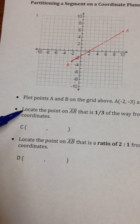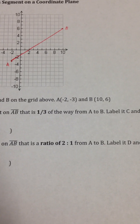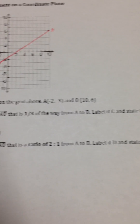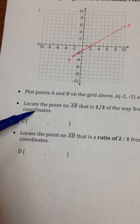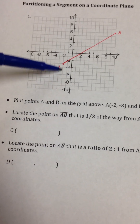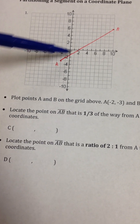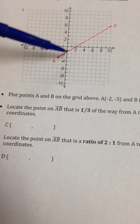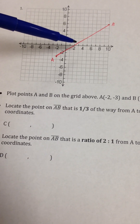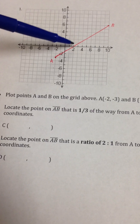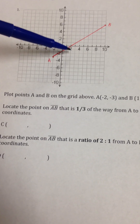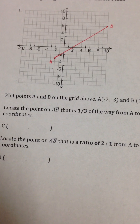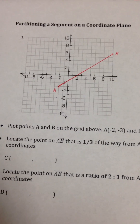Let's read the next question. It says locate the point on AB that is a third of the way from A to B. Label it C and state the coordinates. So we want to find somewhere along this line a point C that is a third of the way to B. Slope is going to help us find exactly where that point is.